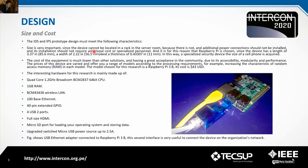Its installation should not require additional cost or specialized personnel. For this reason, Raspberry Pi is chosen, since the device has a length of 85.6 millimeters by 56.5 millimeters and a thickness of 11 millimeters. The cost of the equipment is much lower than other solutions. The model chosen for this research is Raspberry Pi 3B, but you can also use Raspberry Pi 4.